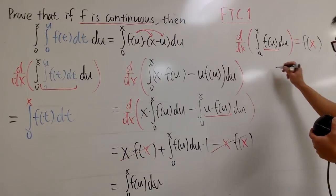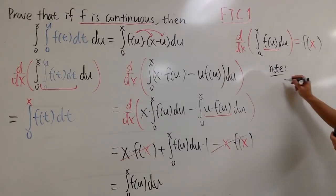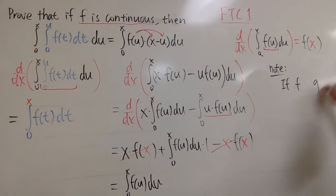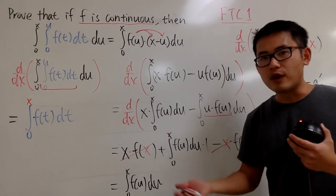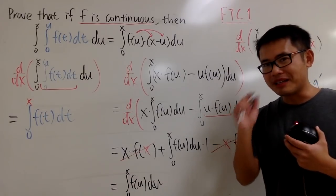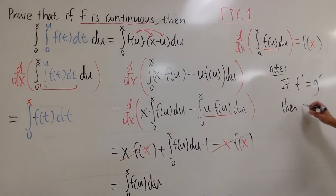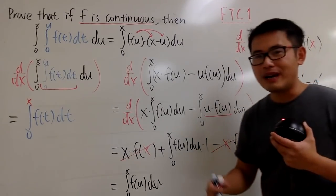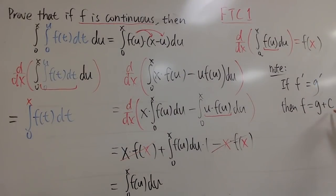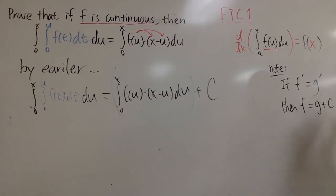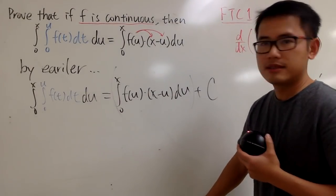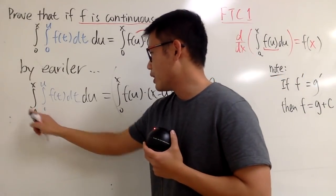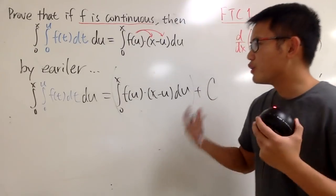What does that mean? Let me put down a note. If we know that two functions f and g have equal derivatives, can we say the original functions are equal? No — they are off by a constant. So we can only say f equals g plus some constant c. We have to put down plus c. But if we are lucky enough to show c equals 0, then we can say f equals g. So how can we figure out the constant? Let's try to figure this out by selecting some x value, and hopefully we can argue that c equals 0.